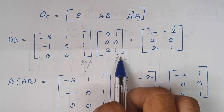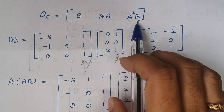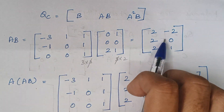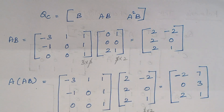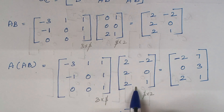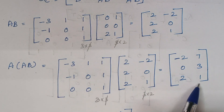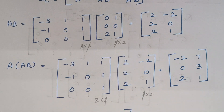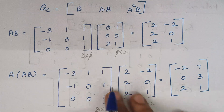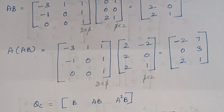Here we are doing matrix multiplication. The next thing we need is A²B, which can be written as A into AB. We already have AB, so just multiply with A again. This is your A matrix and this is your AB matrix. When you multiply, we get an output matrix of order 3×2. So we have found the values of all the matrices: B, AB, and A²B.